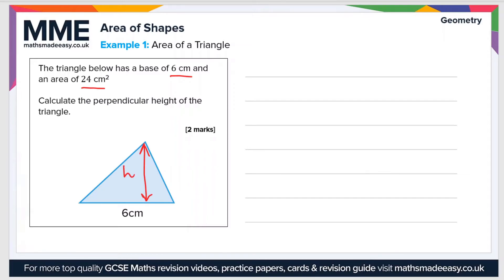Now the formula we'll use, the first one here, is that the area of the triangle is equal to a half times the base, which is 6 centimeters, times h.